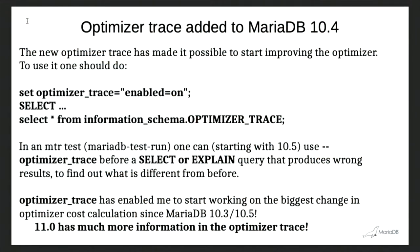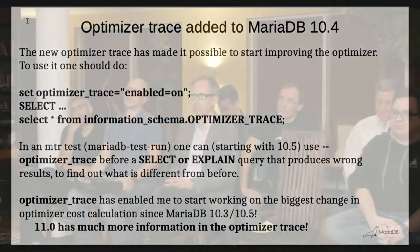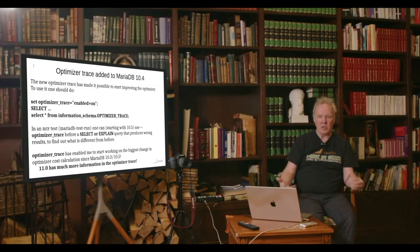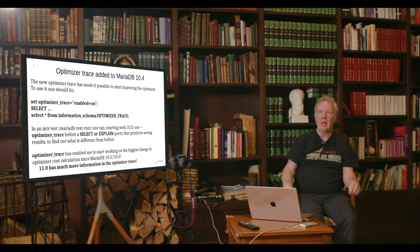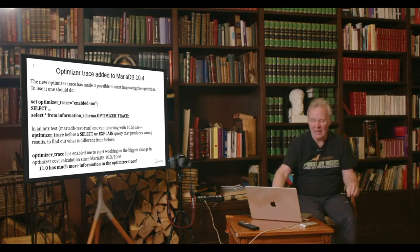The MariaDB optimizer trace was added by Petrunia in 10.4, and without this tool I couldn't have done this work — I'm really grateful we had it. I was a little unsure when it started how useful it could be, and I'm happy to see it's probably one of the best tools for developers working on optimization to see what is going on. As part of this project I added a lot more information to the trace to be able to see the query cost and planning in detail.